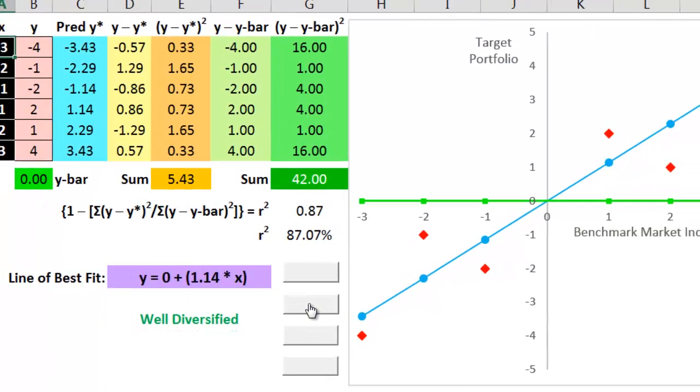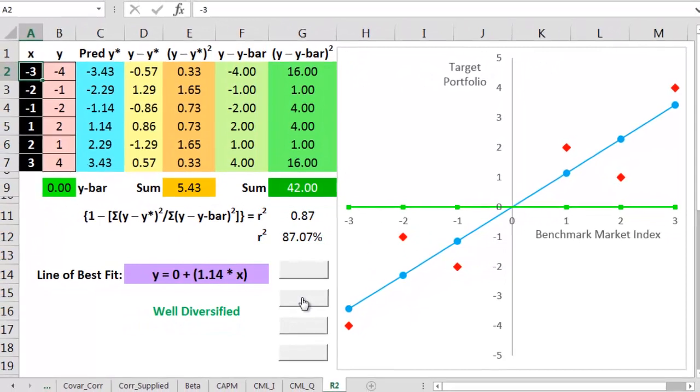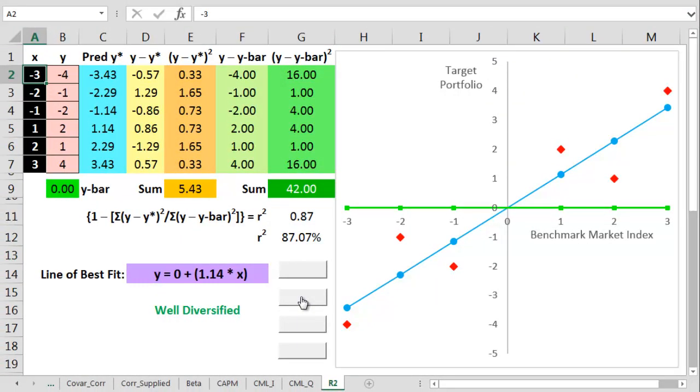You can see the r squared value comes to about 87%. This means the portfolio is well diversified. It's greater than 70%. So what does it mean in terms of the chart? It means the benchmark is significantly driving the target. And because we know the market's well diversified, we're pretty sure the target is too.